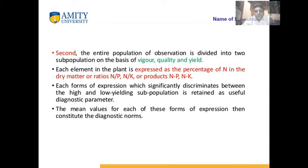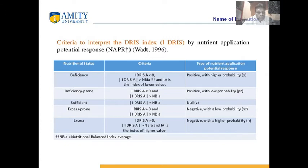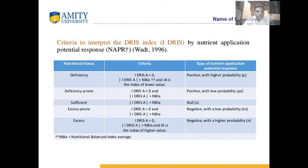The entire population of observations is divided into two subpopulations on the basis of yield quality and health. Different elements are expressed as a percentage of nitrogen in dry matter or as ratios. The mean value for each of these forms of expression constitutes a diagnostic norm. There is a deficiency system ranging from deficient to sufficient level, more than sufficiency, and excess — these are the different nutritional status categories. If the DRIS value is negative (less than zero), this negative index shows deficiency of nutrients.